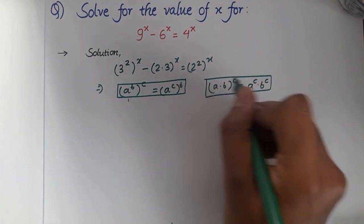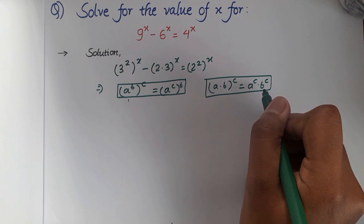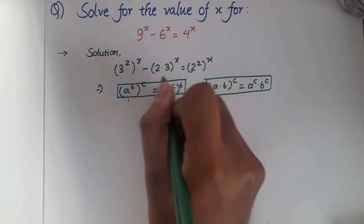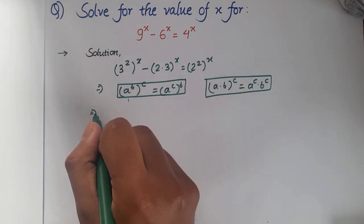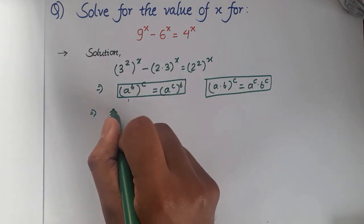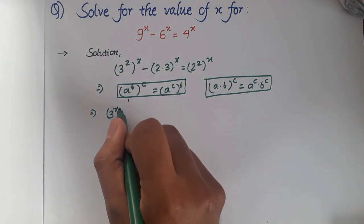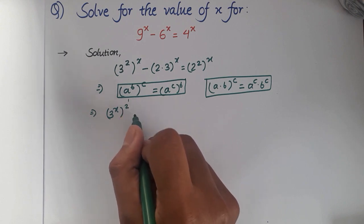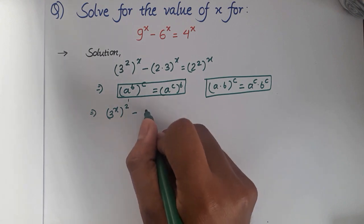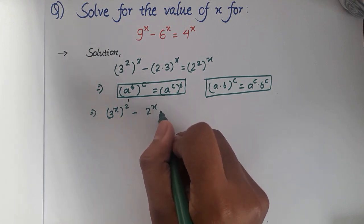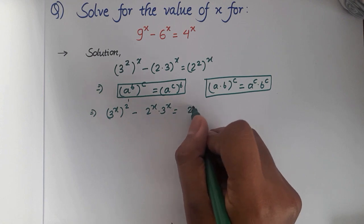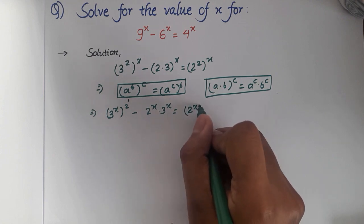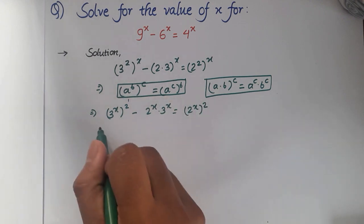So now if we apply these properties in the equation above, then we will have 3 power x, whole squared, minus 2 power x multiplied by 3 power x, is equal to 2 power x, whole squared.